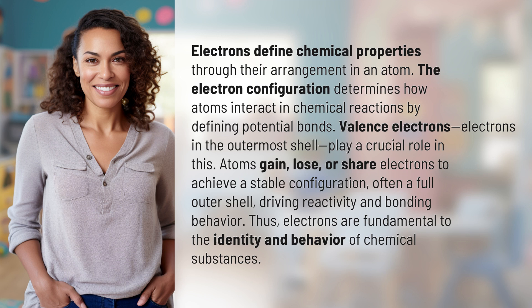Valence electrons — electrons in the outermost shell — play a crucial role in this. Atoms gain, lose, or share electrons to achieve a stable configuration, often a full outer shell, driving reactivity and bonding behavior. Thus, electrons are fundamental to the identity and behavior of chemical substances.